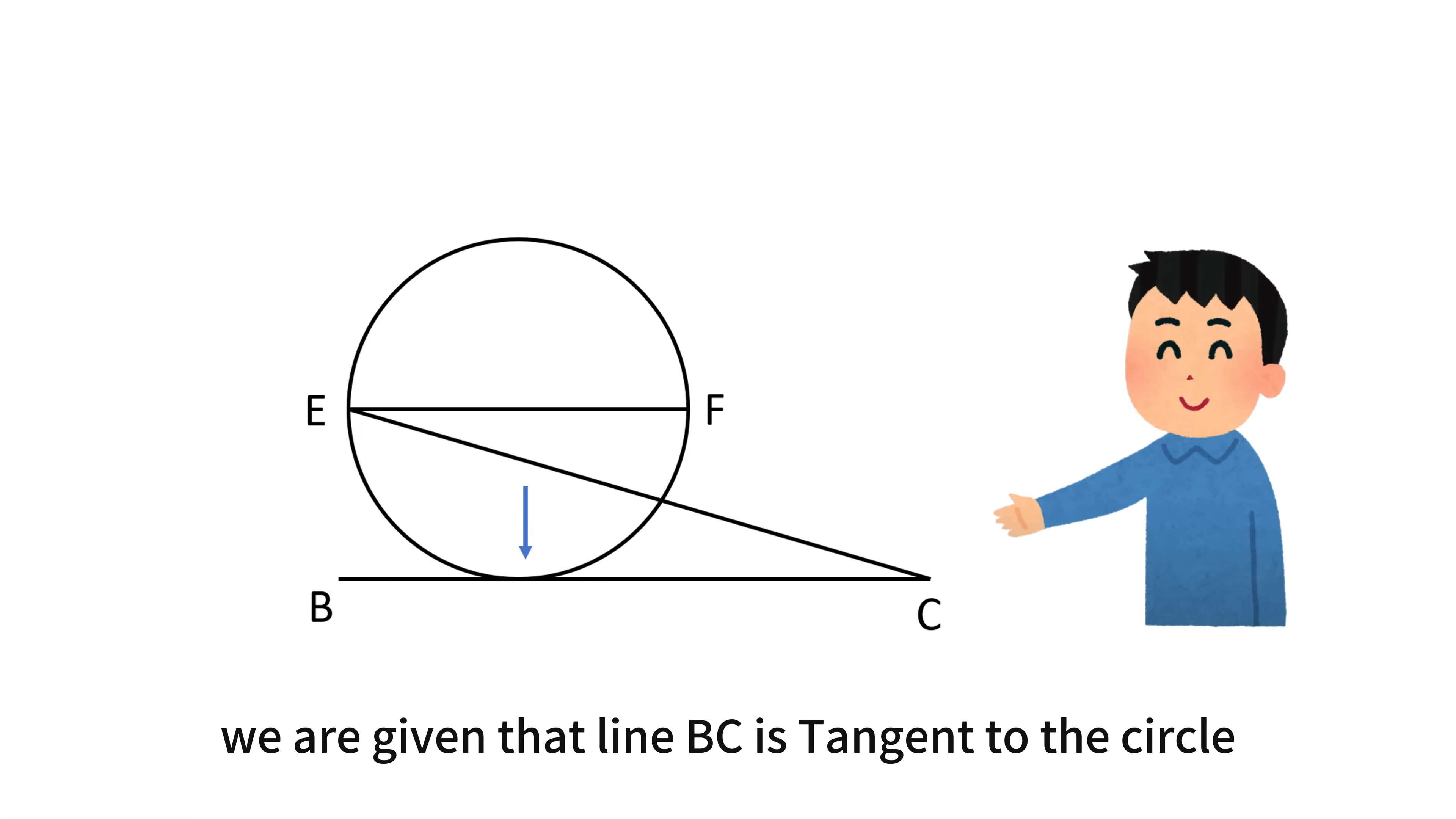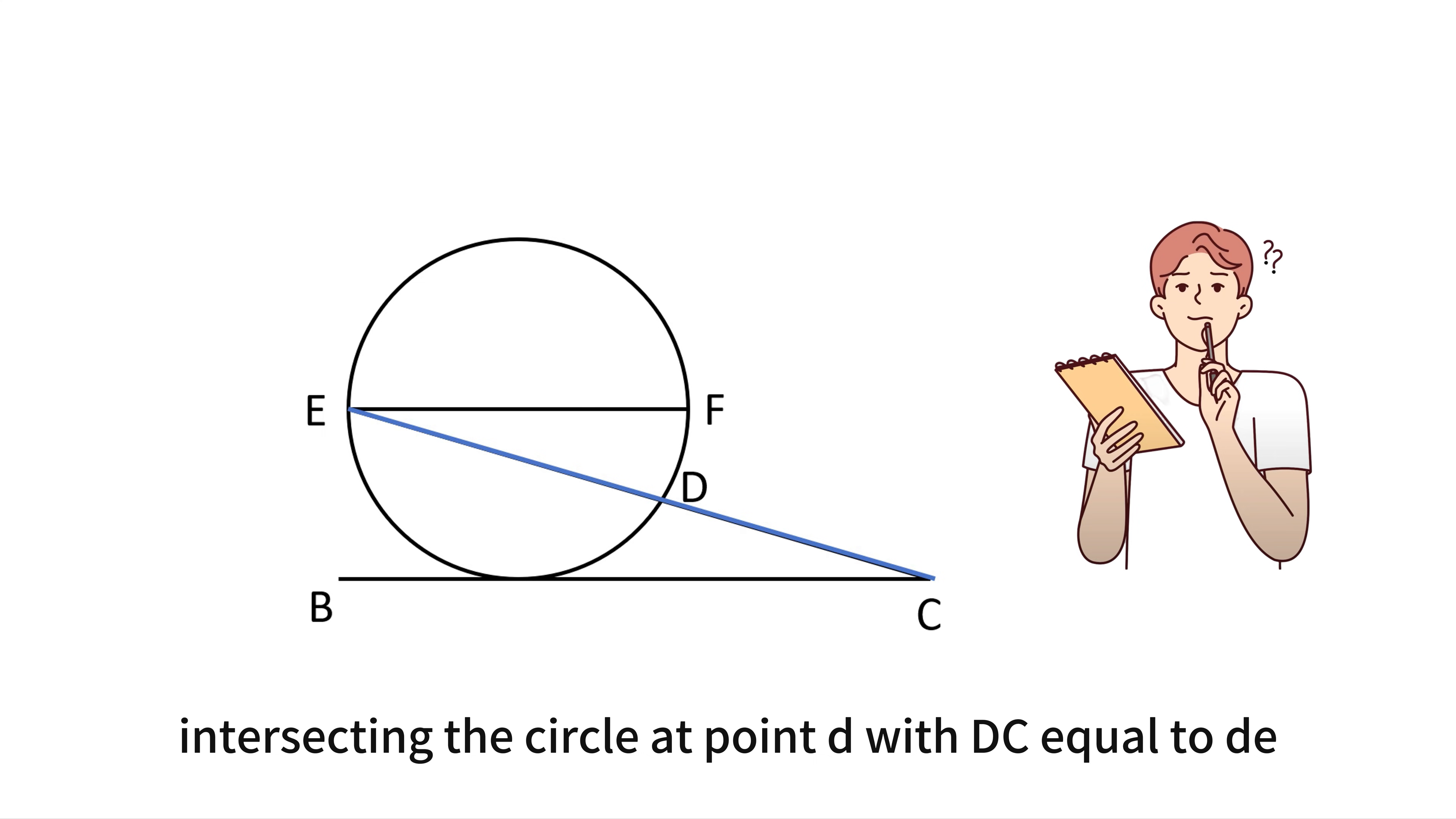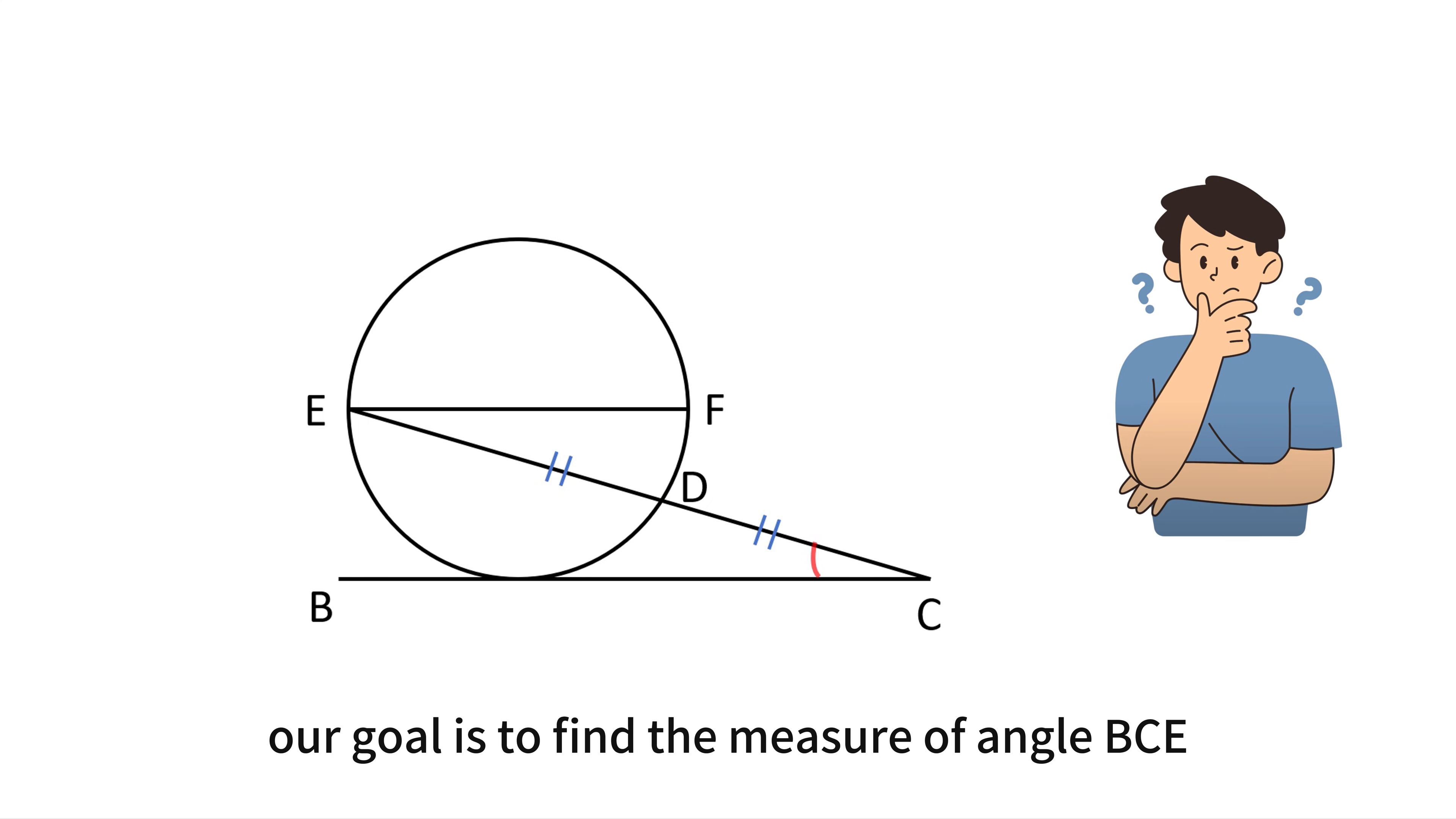We are given that line BC is tangent to the circle. Diameter EF is parallel to BC. We connect line CE intersecting the circle at point D with DC equal to DE. Our goal is to find the measure of angle BCE. Can you solve it?